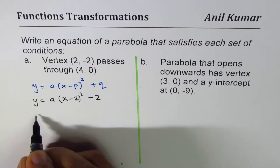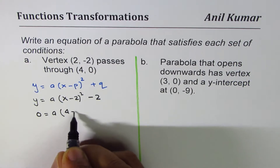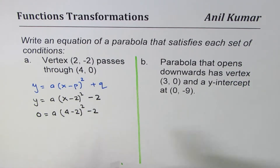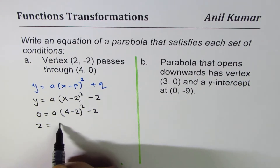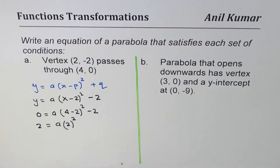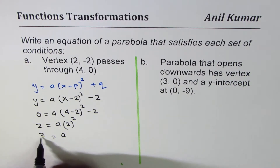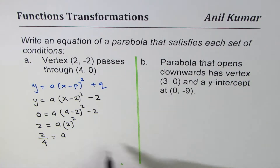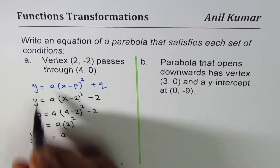To find the value of a, we use the point (4, 0): 4 is the x-value and 0 is the y-value. So 0 = a(4 - 2)² - 2. Solving for a, bringing -2 to the left side, we get 2 = a(4 - 2)², which is 2 = a(2)², or a = 2 divided by 4.